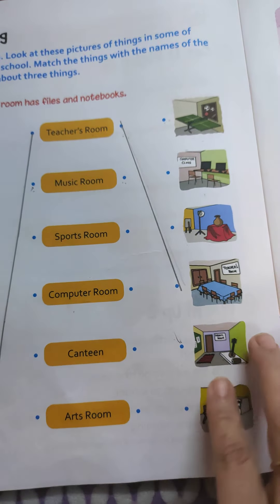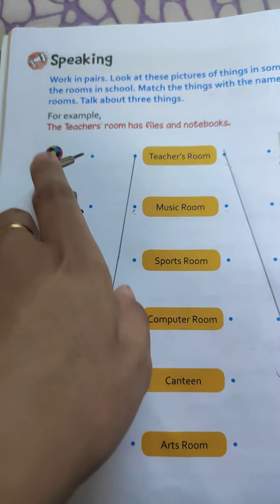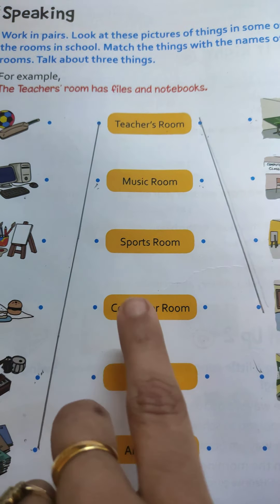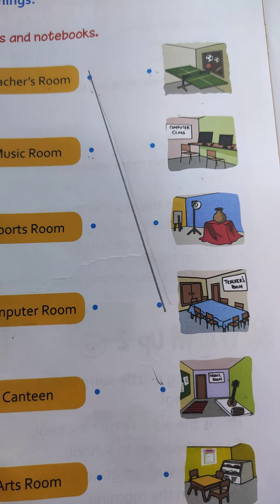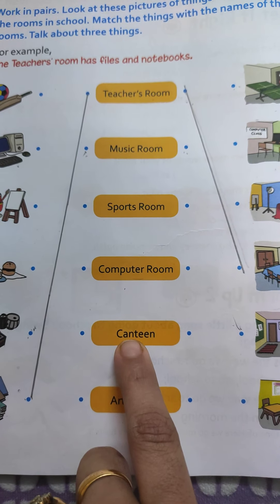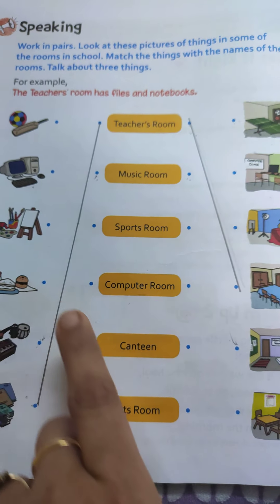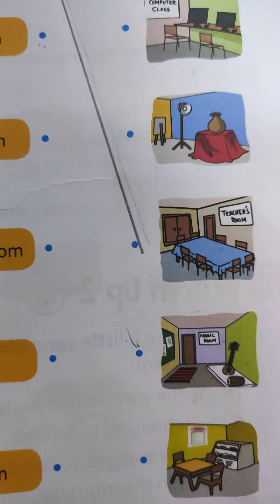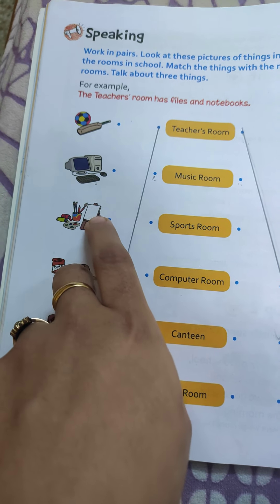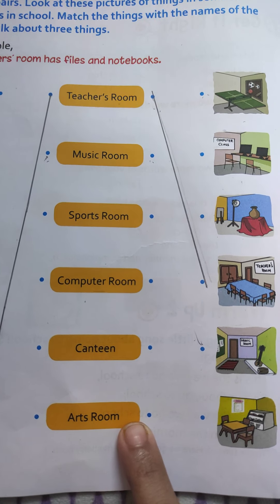In the same way, you are going to do all the other rooms — you will be matching, like the sports room, matching it with the things that you find in the sports room. With the computer room, you will be matching it with the computer, and you have to search for the computer room picture. The same will be with the canteen — you will match one dot to the canteen and the other dot to the picture of the canteen. And the last one is the arts room — from one dot you will match the things in the art room, and with the other dot you will match how the art room looks.